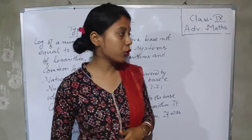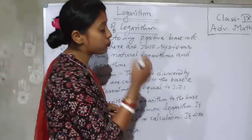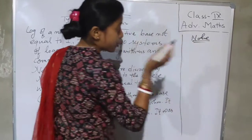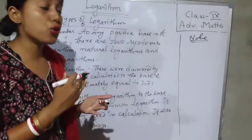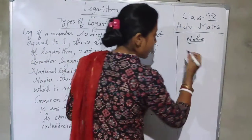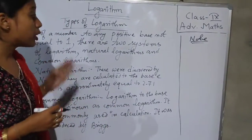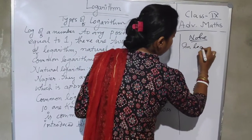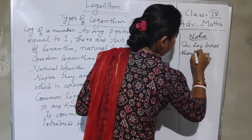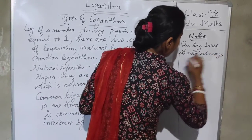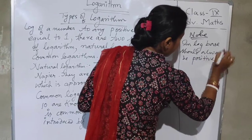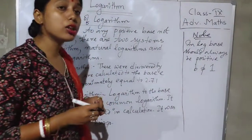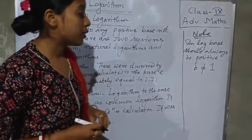Now we will study the types of logarithm. Before doing that, you have to remember some conditions. First, the base should always be positive. Also, the base cannot be equal to 1.